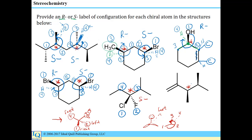Finally, we can see this chiral center here. Labeling first, second, third, and fourth priorities — with the fourth priority away from us — counting 1 to 2 to 3 looks like a right-hand turn, a clockwise progression. That is an R configuration.